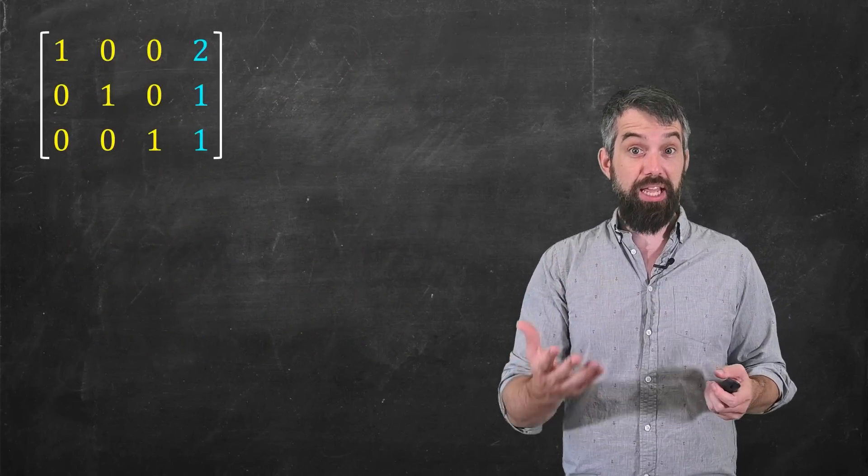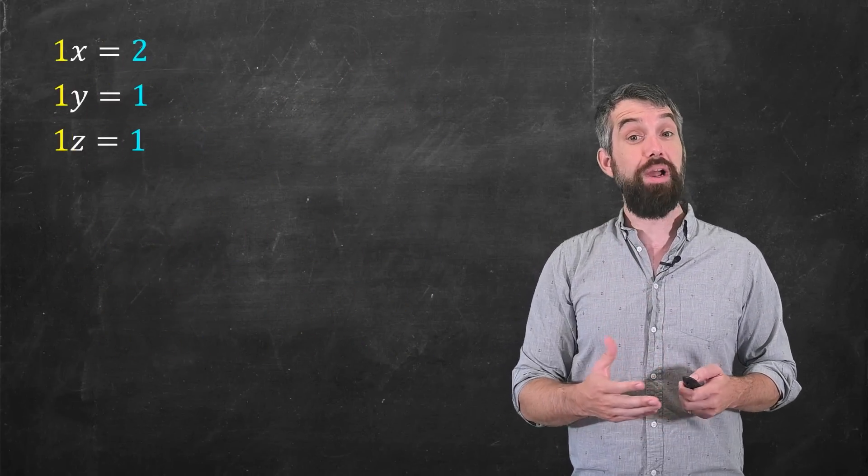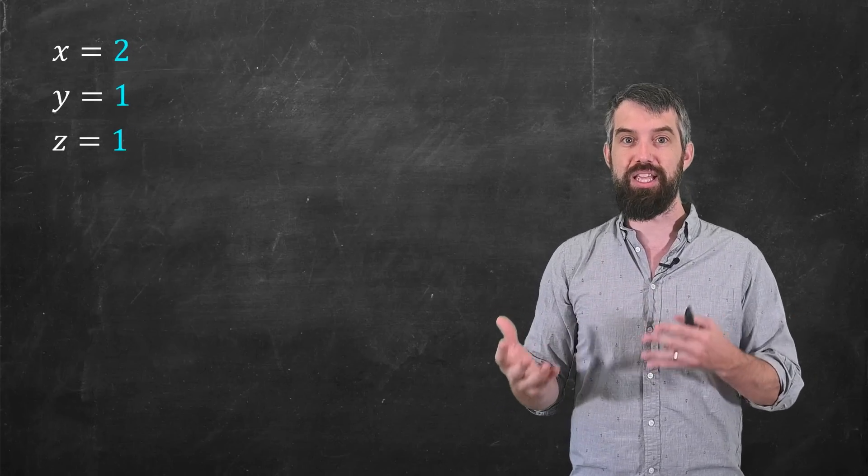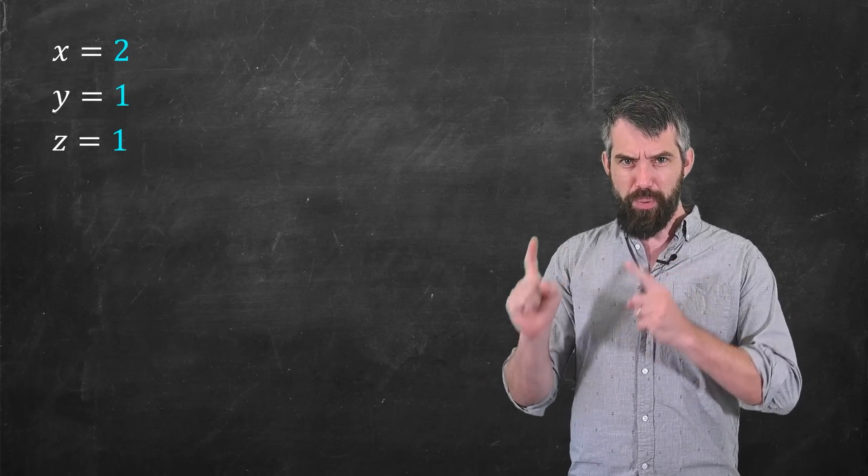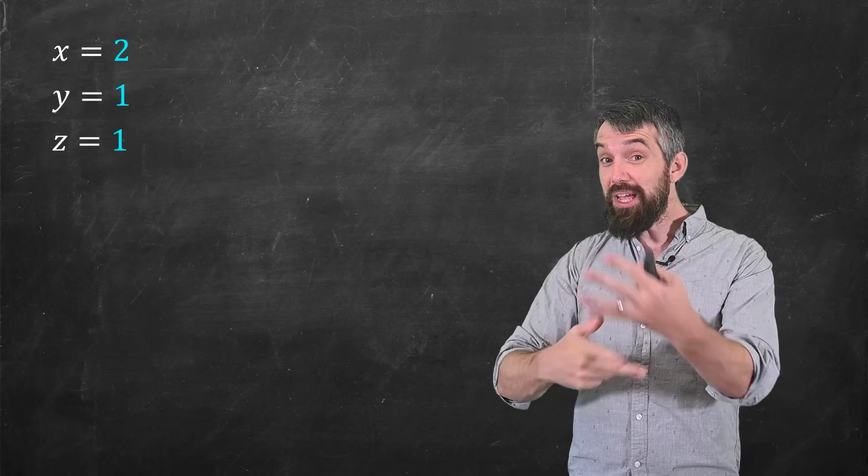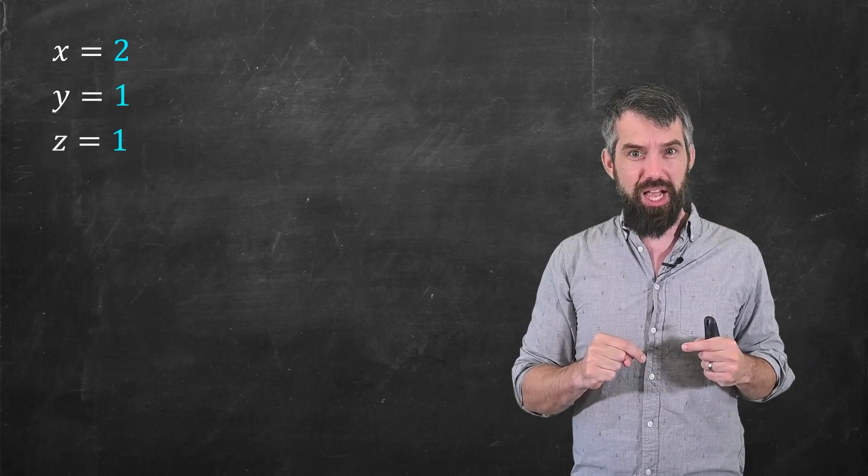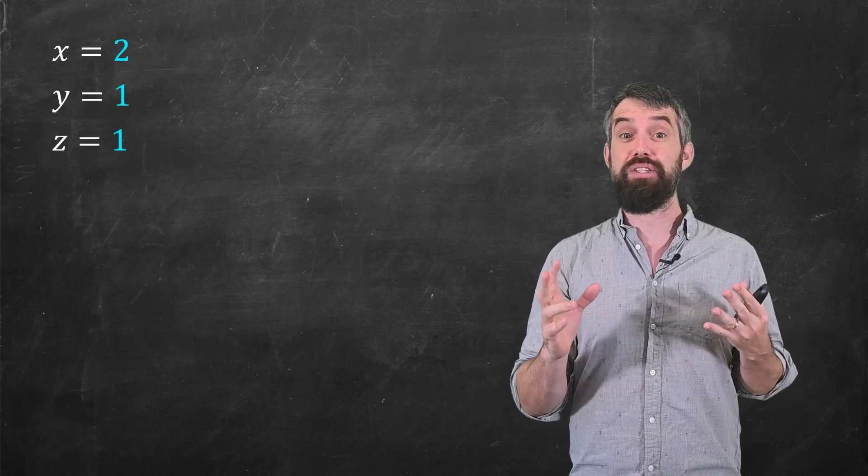When you translate that matrix back into equations, you get the simple answer that x equal to 2, y equal to 1, and z equal to 1. So the point is, there's algebraic manipulations occurring, but my question for this video is, what does all of this mean geometrically?